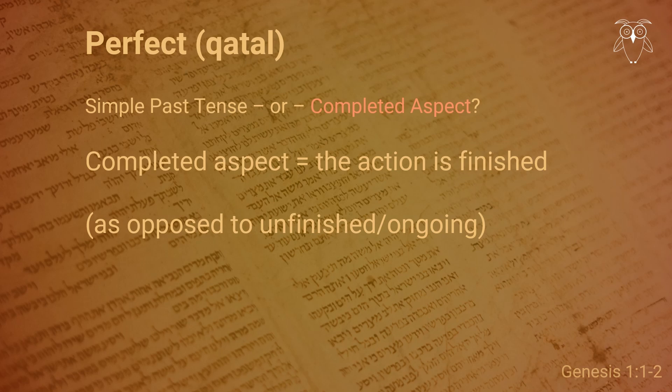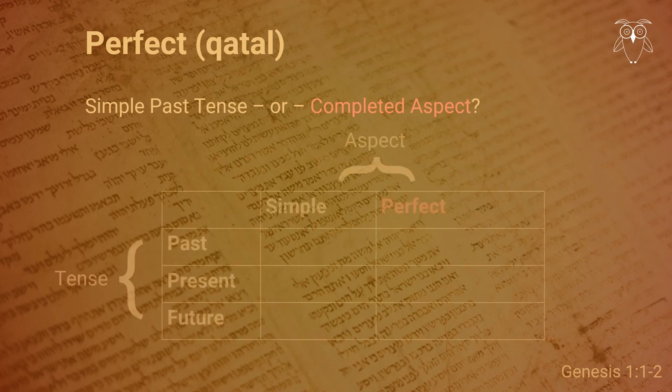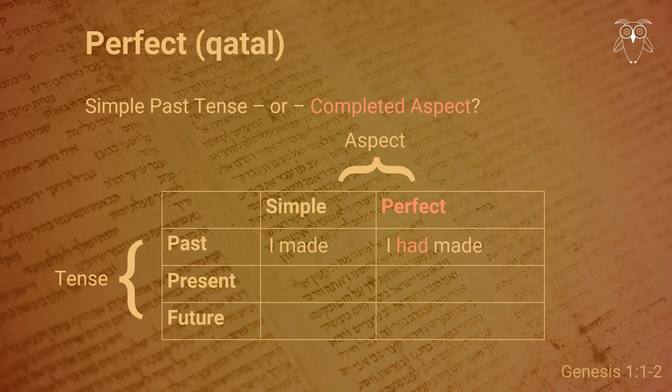What I mean by that is that often in Hebrew the perfect is used to describe that an action is completed, as opposed to incomplete or ongoing, rather than that it happened in the past. In English, we also have a perfect with a completed aspect, and it is formed by adding a form of the verb 'to have.' The interesting thing is that this completed aspect can be found in the present and future tenses as well: 'I make' — an action in the present; 'I have made' — the action is completed. 'I will make' — an action in the future; 'I will have made' — the action will be completed in the future.